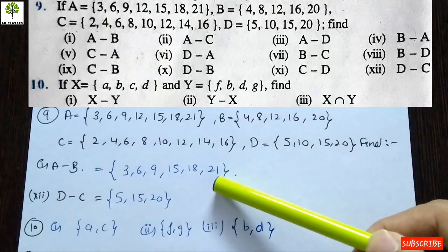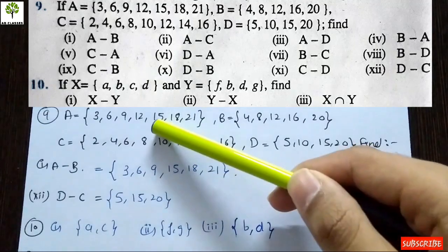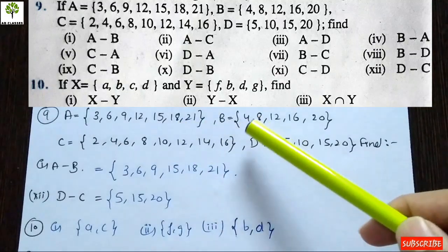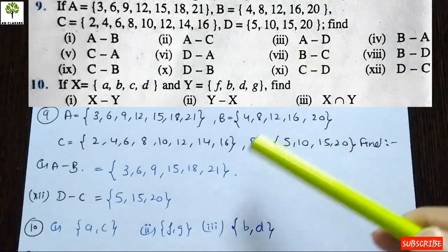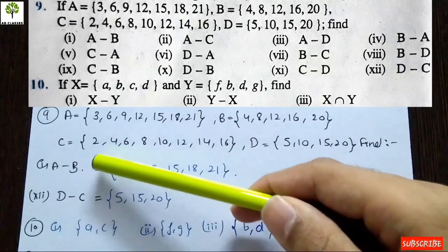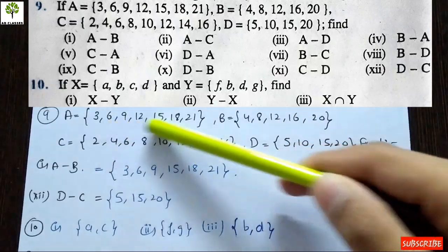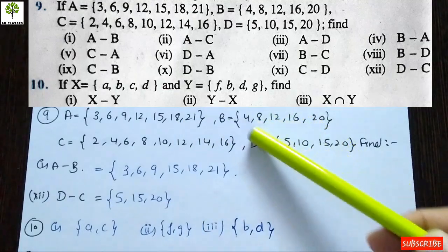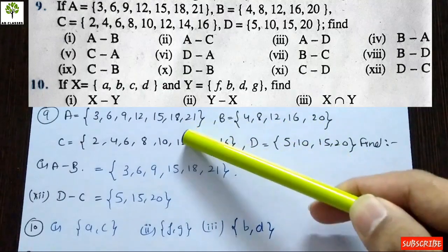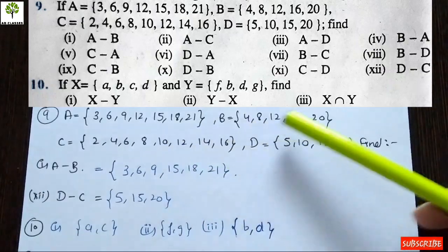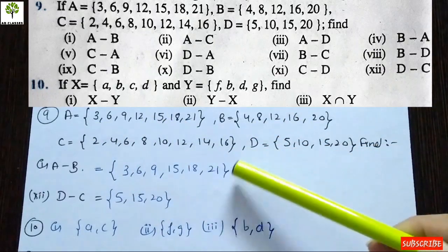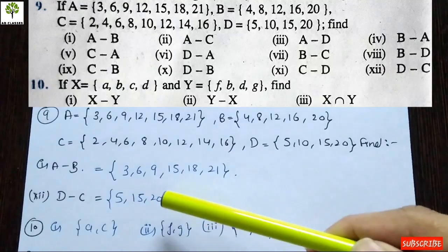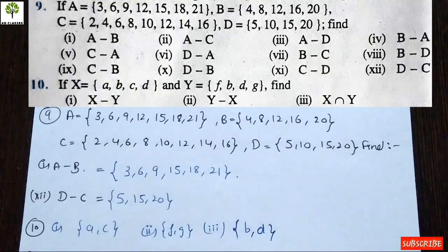After removing the common elements of B from A, the answer for A minus B is {3, 6, 9, 15, 18, 21}. The element 12 was common in both sets so it gets cancelled out. This is written directly in the question. All 12 parts involve subtraction questions, and for the part D minus C, we perform that subtraction next.